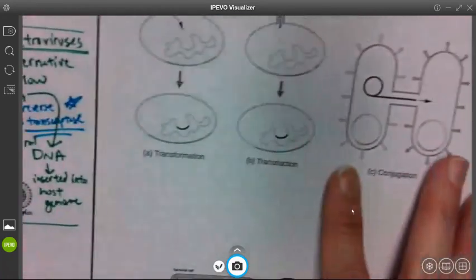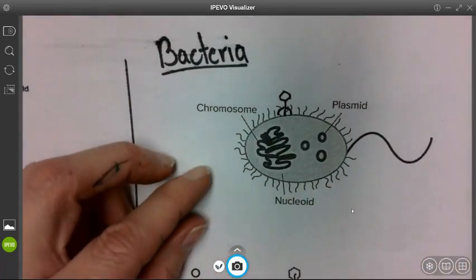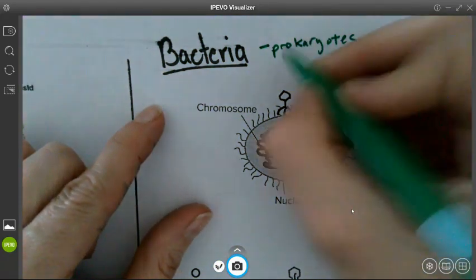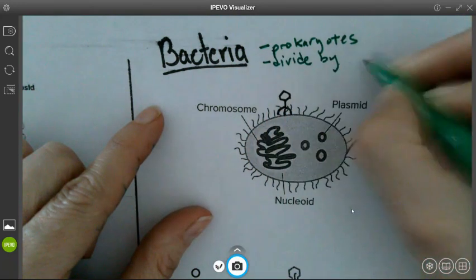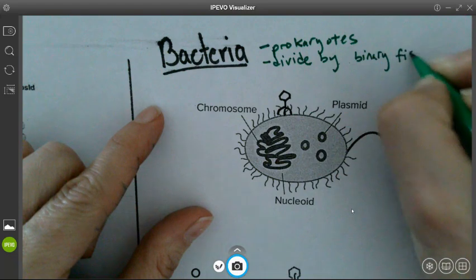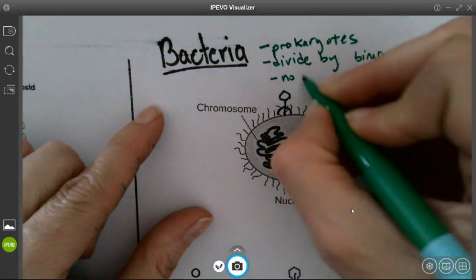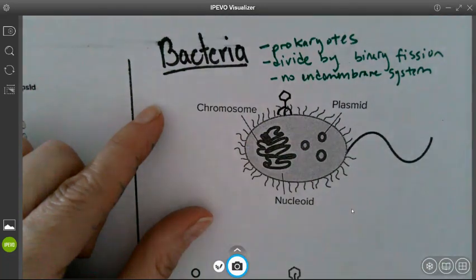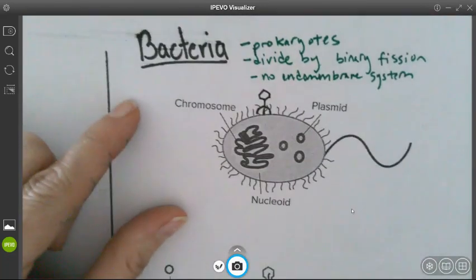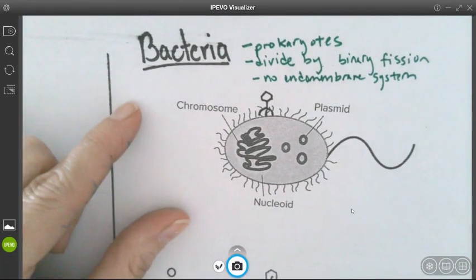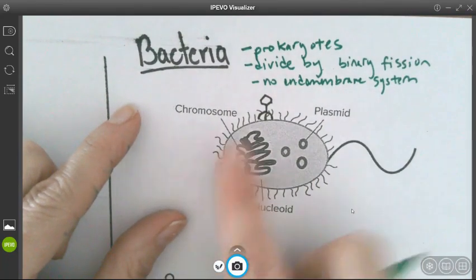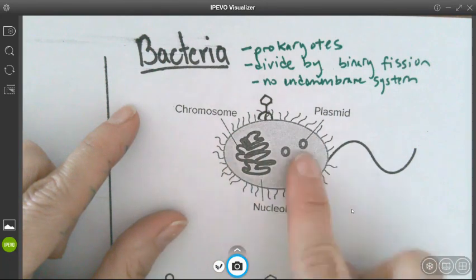All right. So that's viruses. Let's jump into bacteria. We already know this about bacteria, but just to kind of review, bacteria are prokaryotes. They divide by binary fission. And they have no endomembrane system. So this means their chromosome is not inside a nucleus. They don't have an ER. They don't have a Golgi. They're still able to do all their cellular processes, but they usually do them on infoldings of the cell membrane or just in their cytoplasm.